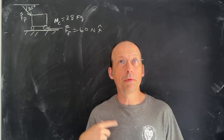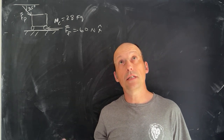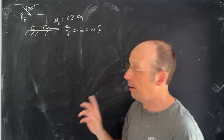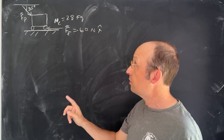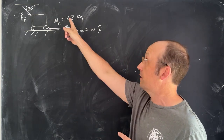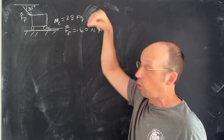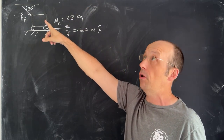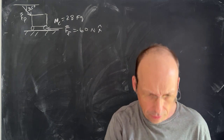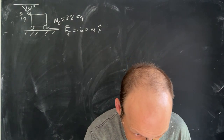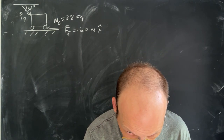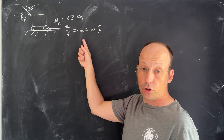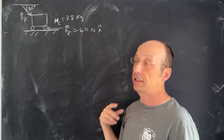Problem 35, OpenStax College Physics Textbook, Chapter 4. A nurse pushes a cart with a mass of 28 kilograms. She pushes down with some force at a 35 degree angle below the horizontal. And there's a backwards pushing frictional force of 60 newtons.